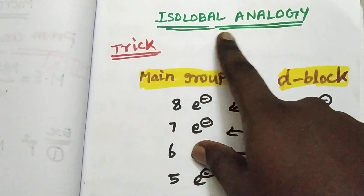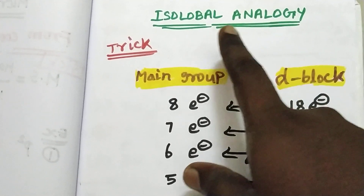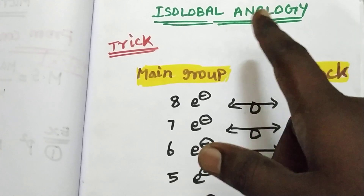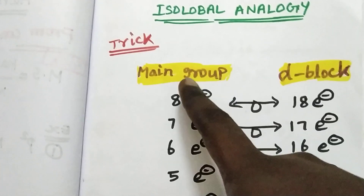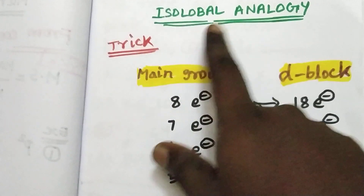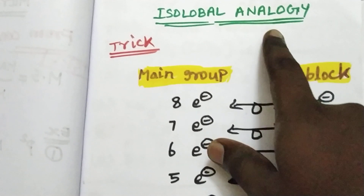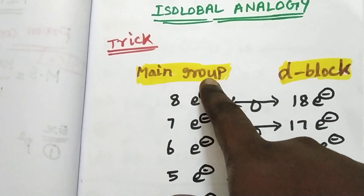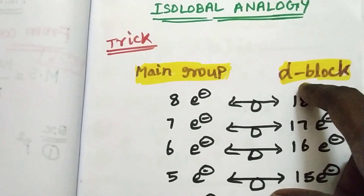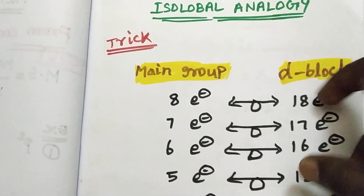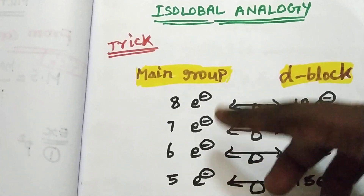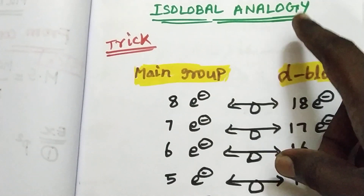Welcome to the Isolobal Analogy. This is the first chapter of this topic. Let's talk about main group elements — that means main group elements form one compound and d-block elements form one compound. If the electronic configurations are the same and the properties are the same, that is the Isolobal Analogy.